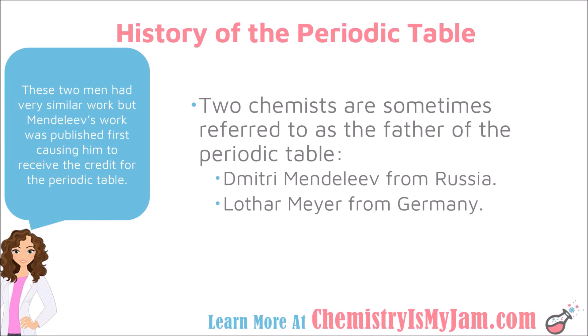Our modern periodic table is credited to two scientists: Dmitry Mendeleev from Russia and Lothar Meyer from Germany. These two scientists were working separately on the same idea. However, Mendeleev published his work first, so he receives the majority of the credit. Mendeleev was also able to use his periodic table to predict the properties of some elements that had not been discovered yet, which gave a lot of credibility to him within the scientific community.